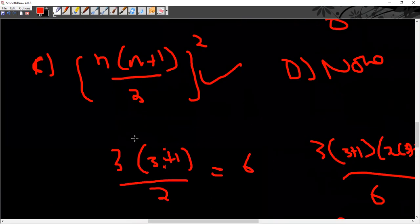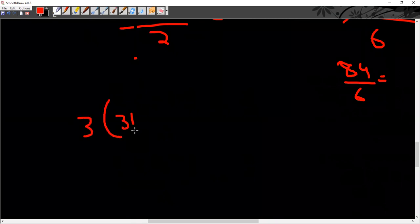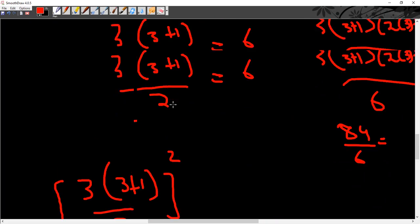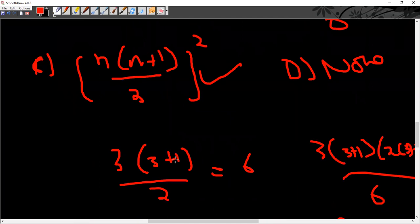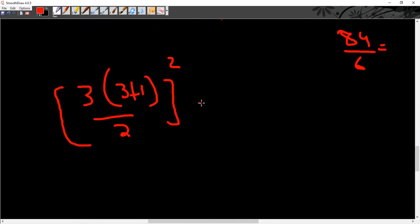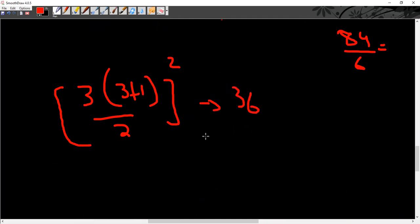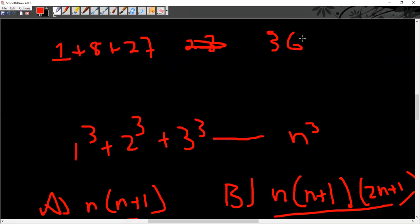Now look at option C: 3 into 3 plus 1 divided by 2 whole square. Now you can see that option C is option A squared. So if option A is 6, then option C is 36. This is your required answer.